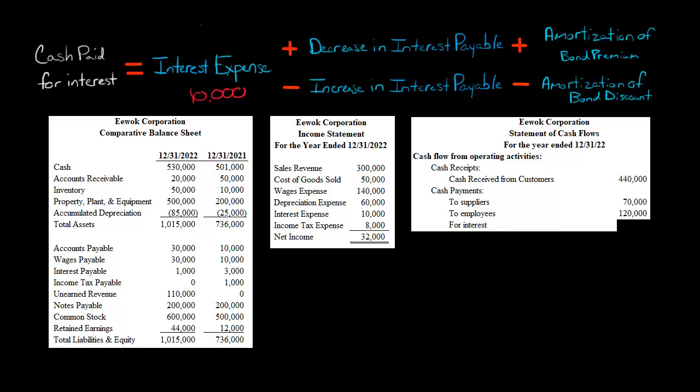We actually went down. There was a decrease in interest payable in this case, so that's going to get added. That's going to be $2,000 that's going to be added. We don't have any bond premium or bond discount being amortized in this example, so we don't even have to worry about that.